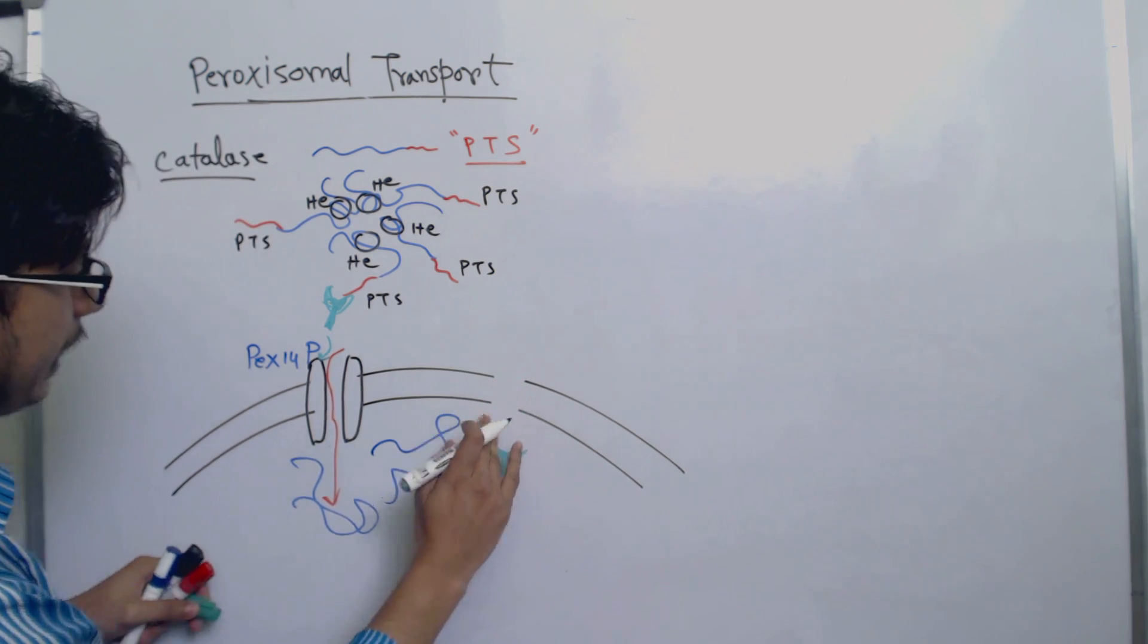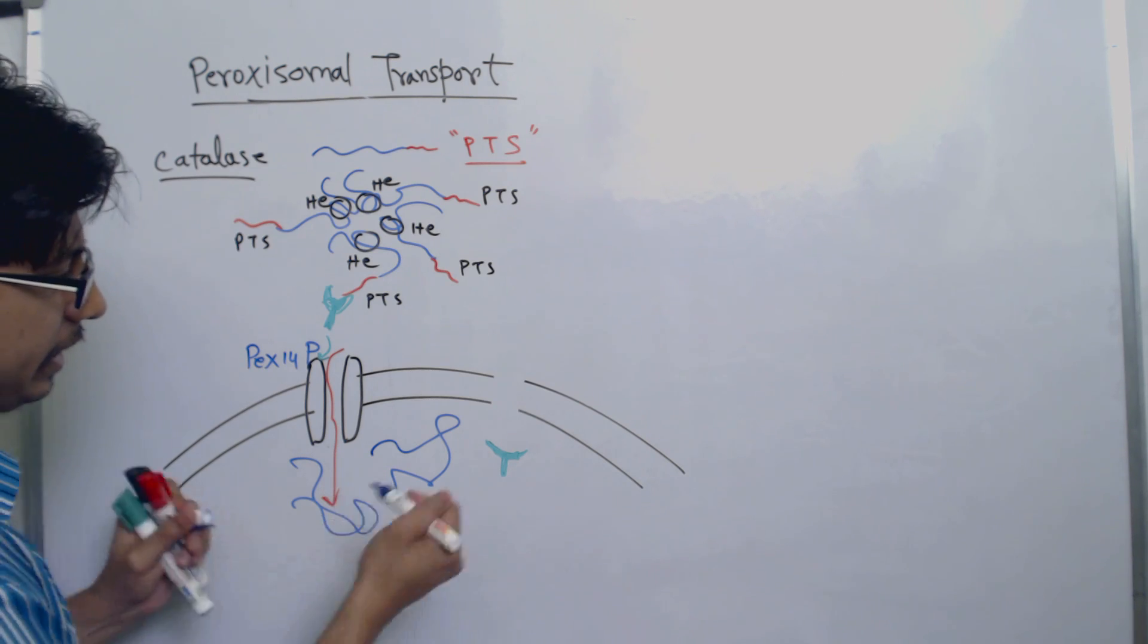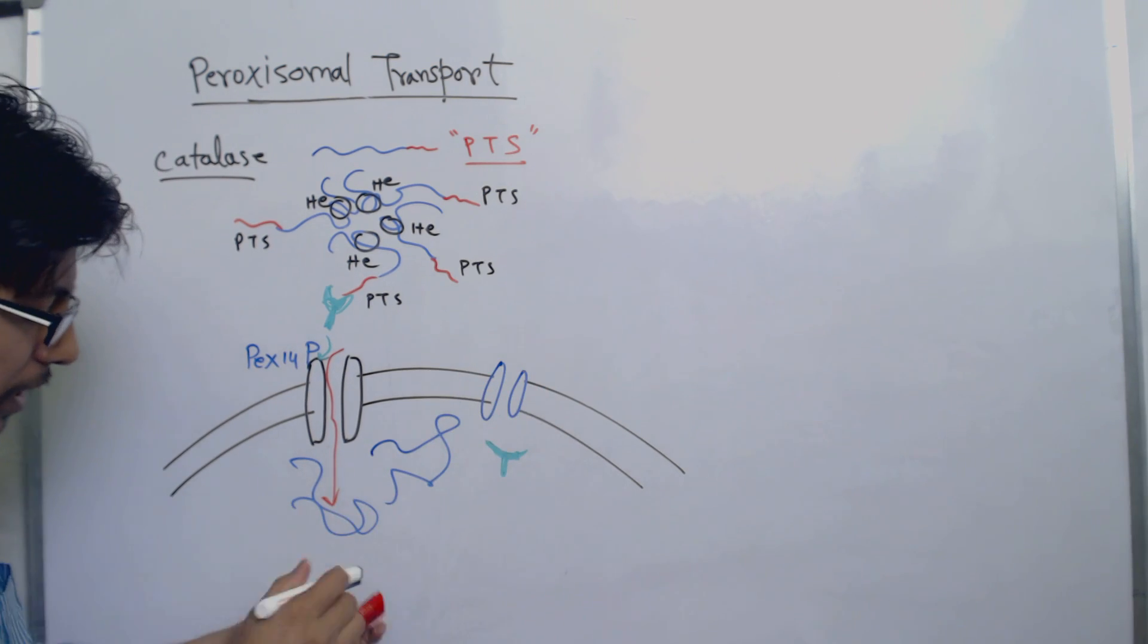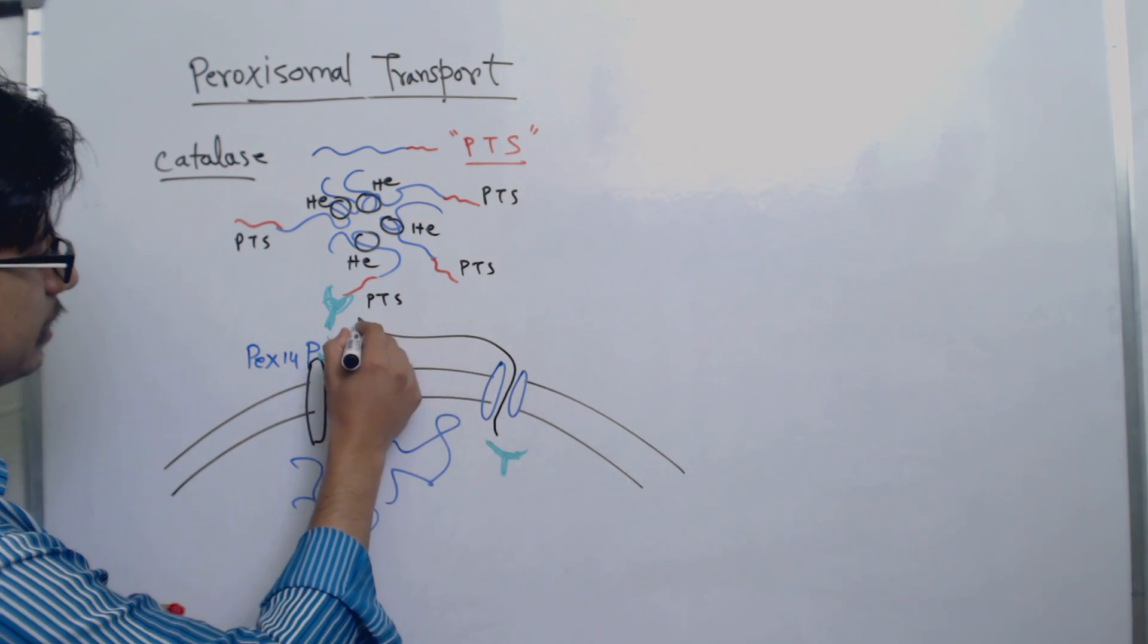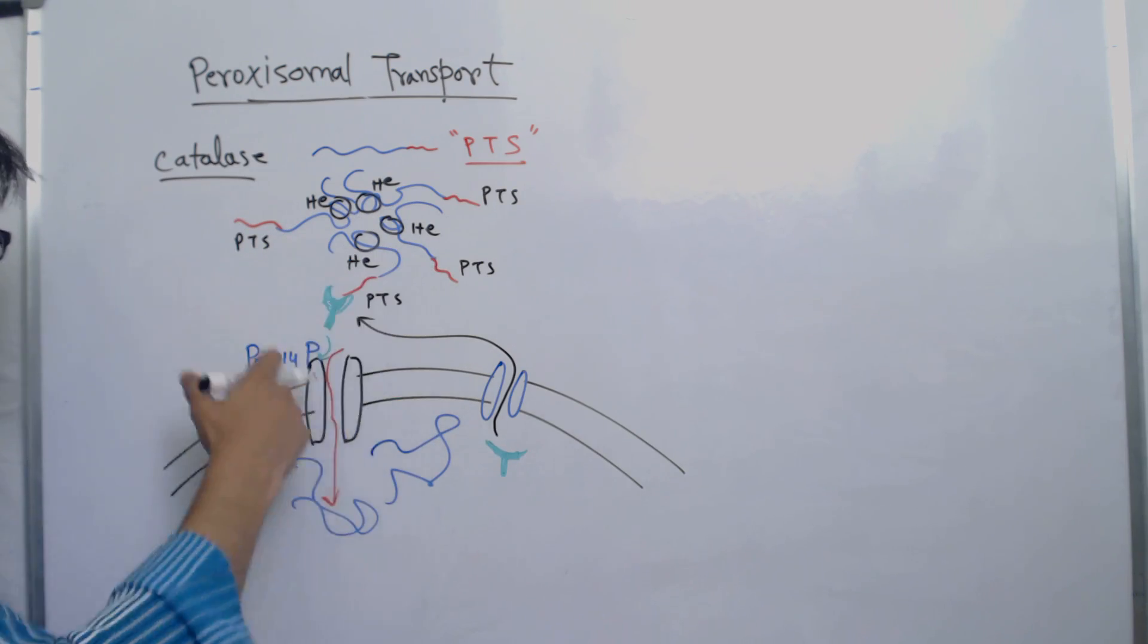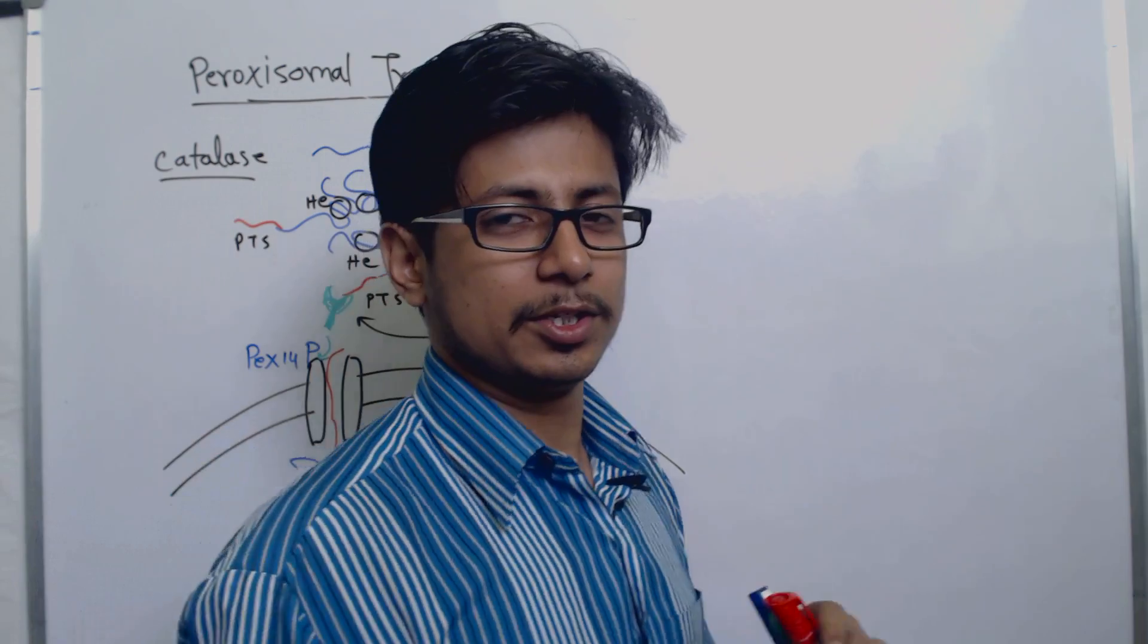This PTS receptor, with the help of another transporter channel present in the peroxisome membrane, can be shuffled back and recycled for the next round of protein delivery inside the peroxisome.